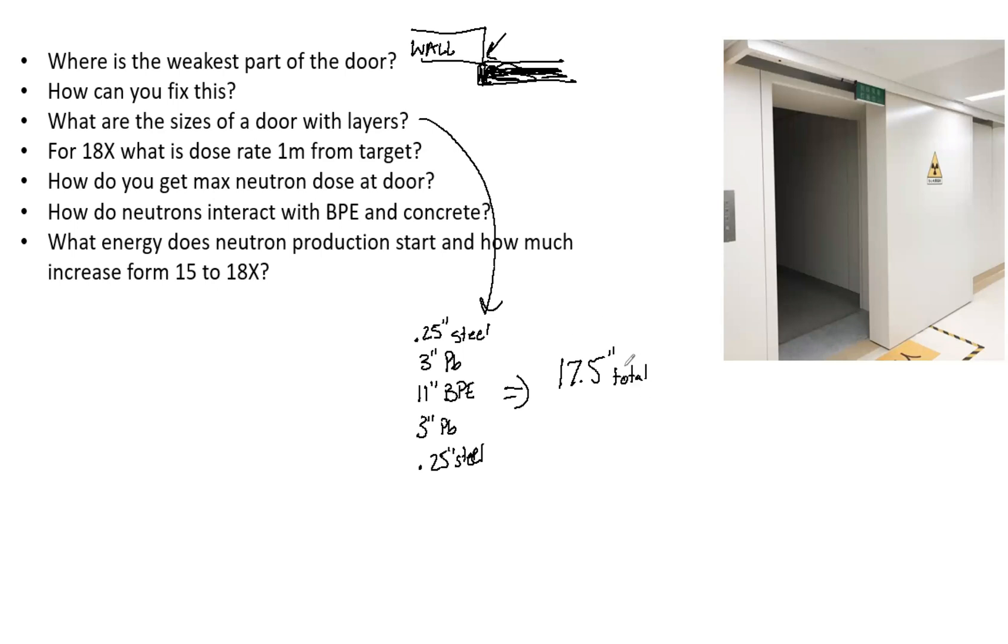It's important to know these layers and why we have them - for example, the recoil neutrons, the gammas that are created, why there's lead after the BPE. But ultimately know about 20 inches is a door. We see these doors every day, but when they ask it in the exam you might freeze up. For 18X, what is the dose rate one meter from the target? This is just memorization, but it's 1.5 mr per gray approximately.